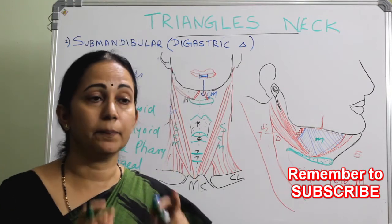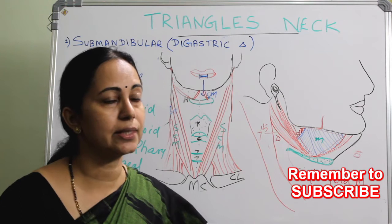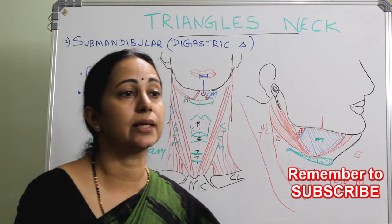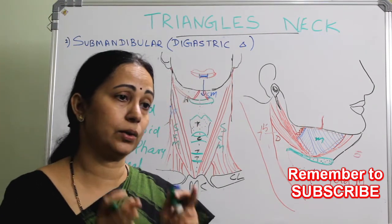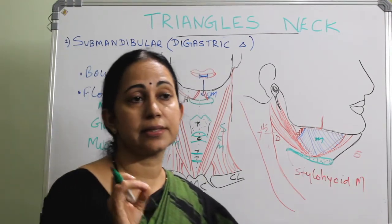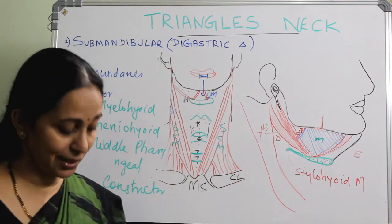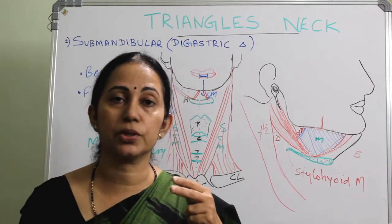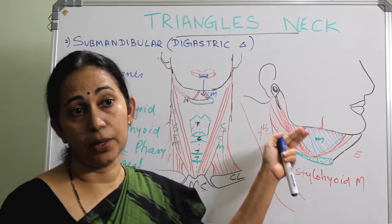The main content of the submandibular triangle is the submandibular salivary gland, along with the submandibular lymph nodes, and some arteries and nerves. The largest salivary gland in the body is the parotid gland, and the submandibular gland is the second largest. It has a superficial part and a deep part, which are divided by the mylohyoid muscle.